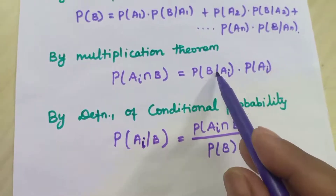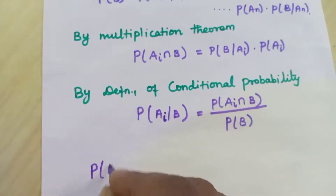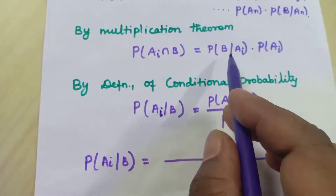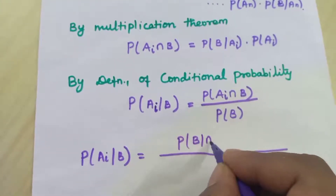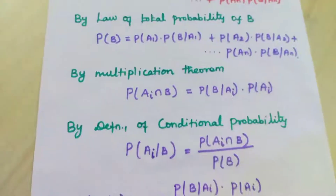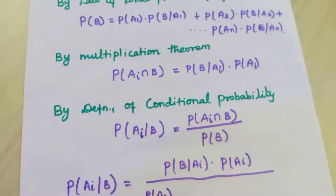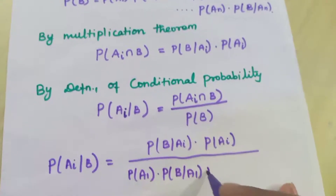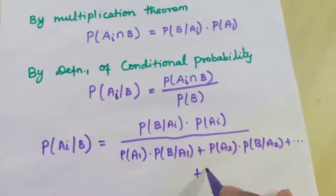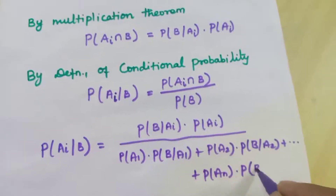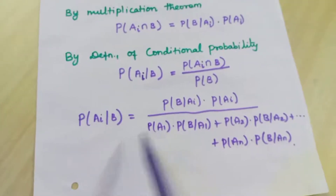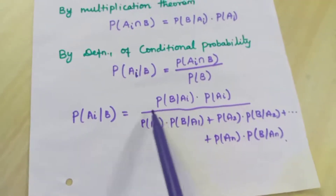Now in place of probability of Ai intersection B, we apply the multiplication theorem. So probability of Ai over B equals, in the numerator, probability of B over Ai into probability of Ai, divided by P(B). From the total probability of B, we write P(A1)·P(B|A1) plus P(A2)·P(B|A2) plus etc. plus P(An)·P(B|An). So we get the formula for Bayes theorem, which gives the relation between P(Ai|B) and P(B|Ai).